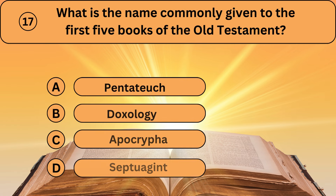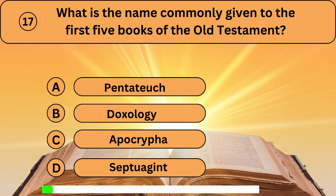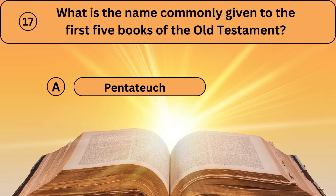Question seventeen. What is the name commonly given to the first five books of the Old Testament? A. Pentateuch. B. Doxology. C. Apocrypha. D. Septuagint. Pentateuch is the right answer.